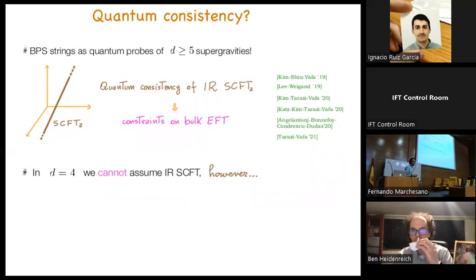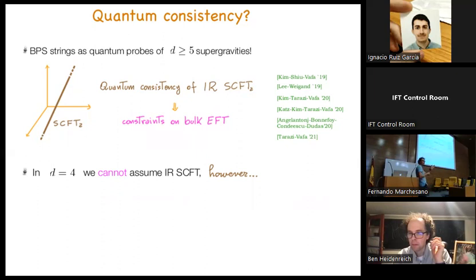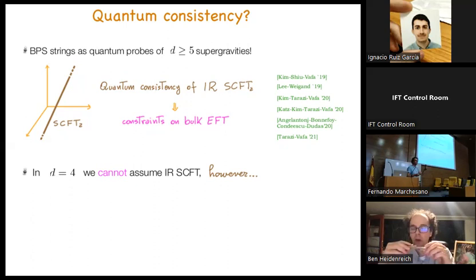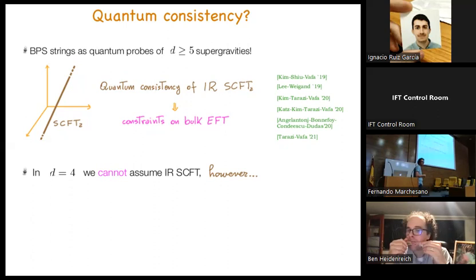The philosophy I will adopt is morally the same as in the paper starting with Kim, Hsu, and Wappa, in which strings in higher dimensions were considered. Crucially, in higher dimensions there is an important difference: the strings can really be considered as probes of the background structure. They do not have such bad infrared behavior. In particular, one can assume the existence of an infrared fixed point of the worldsheet theory, and by exploiting the corresponding superconformal field theory structure, one can obtain nice constraints on the bulk effective field theory.